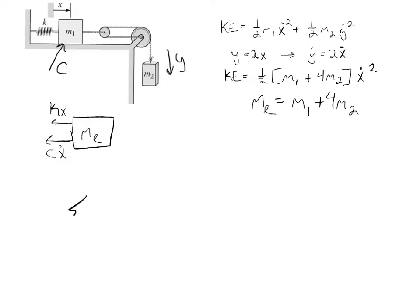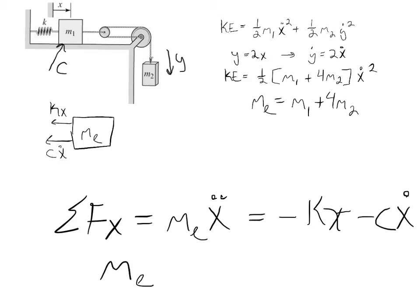So if I were to write the sum of the forces in the x direction, I would get mE x double dot mass times acceleration. And in my forces, I would have a negative kx and a negative cx dot.